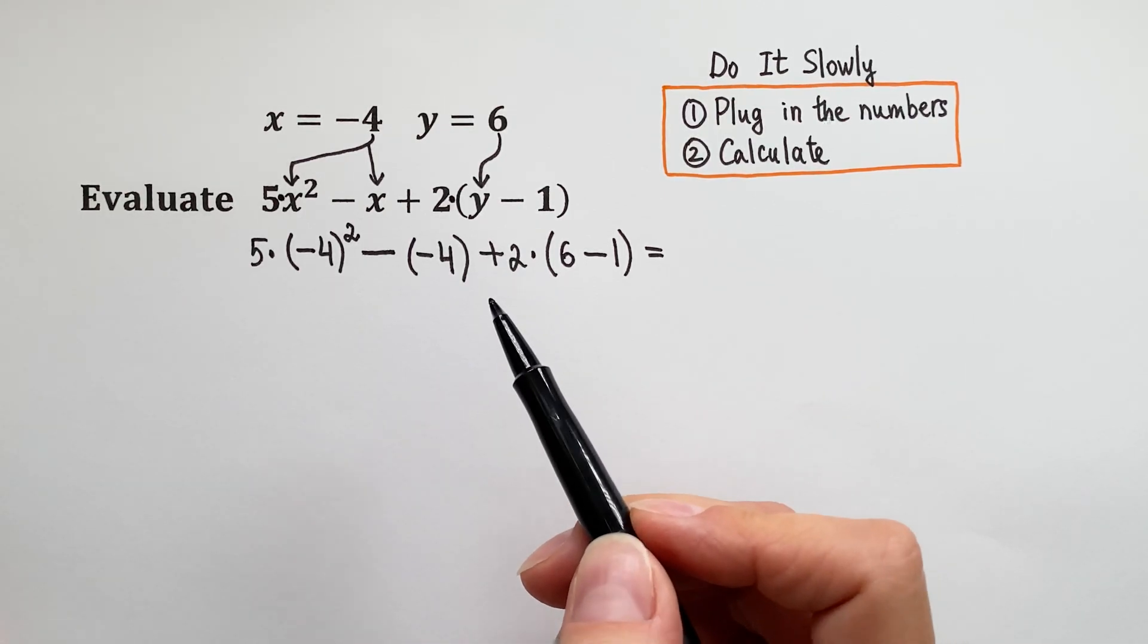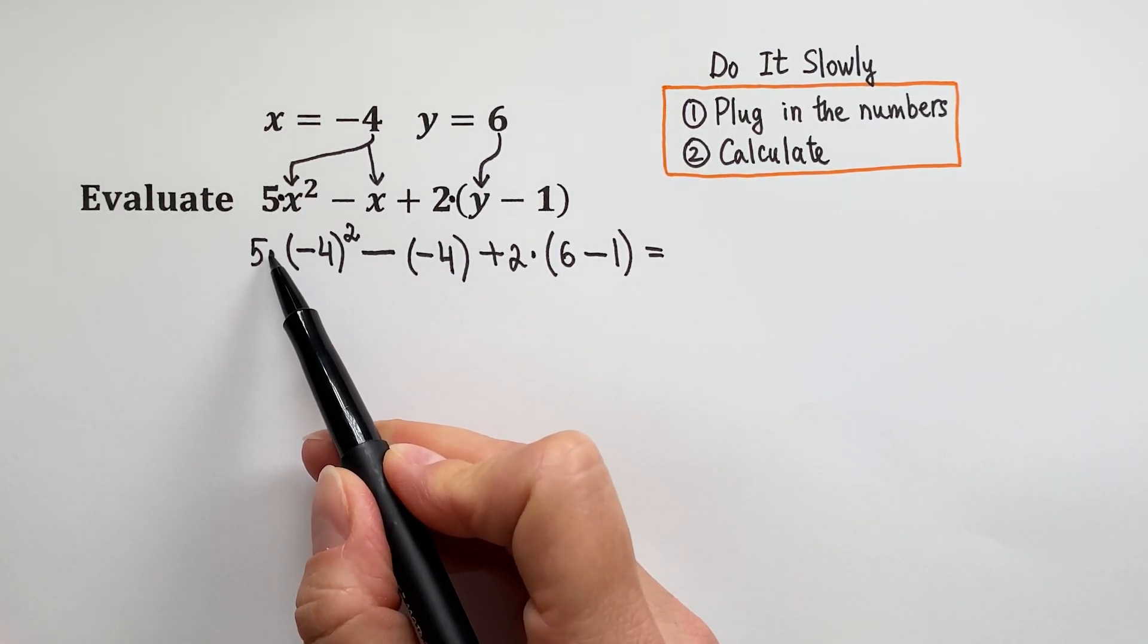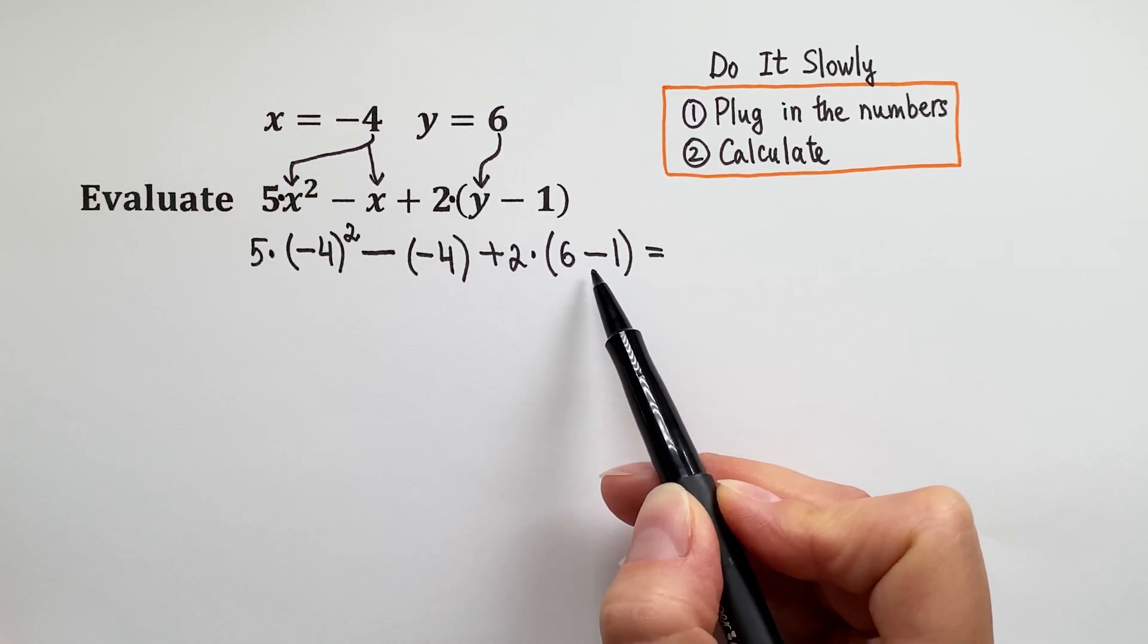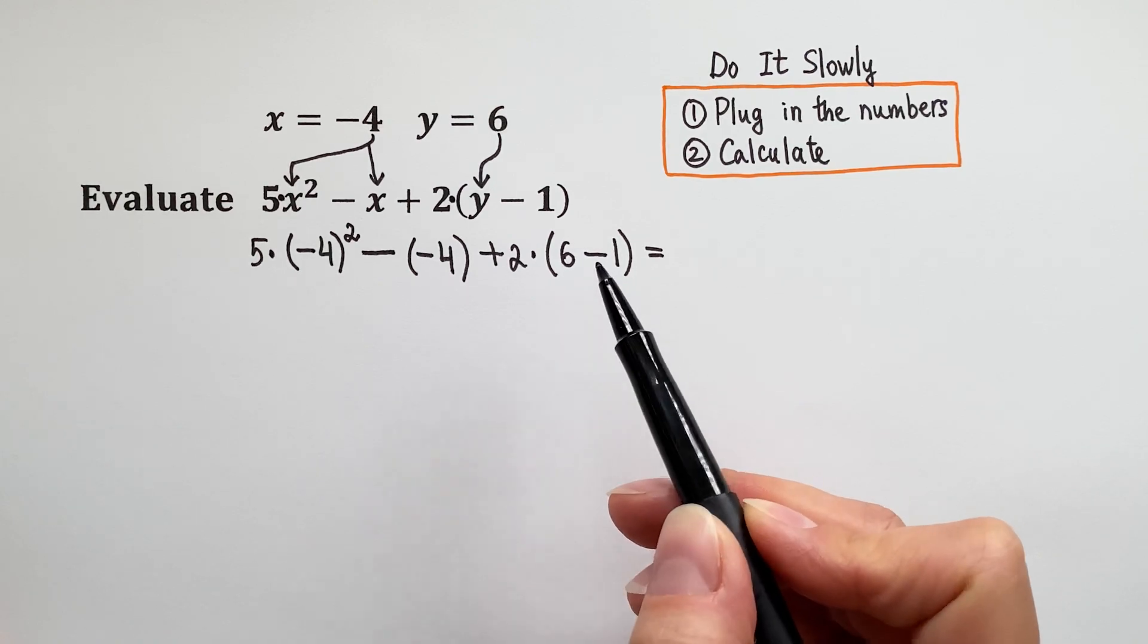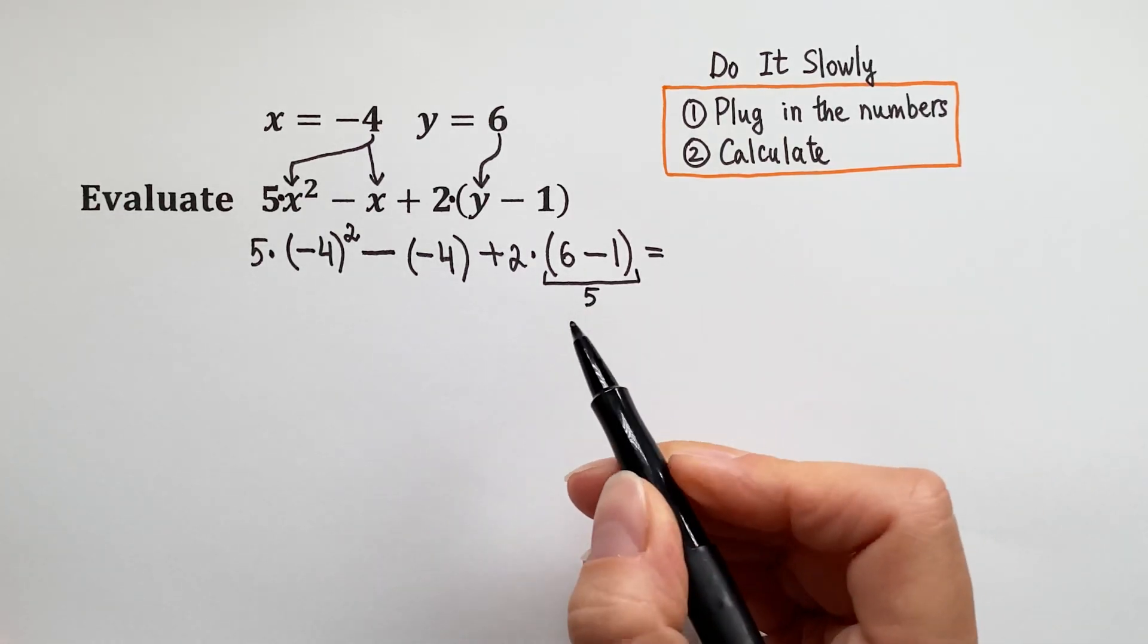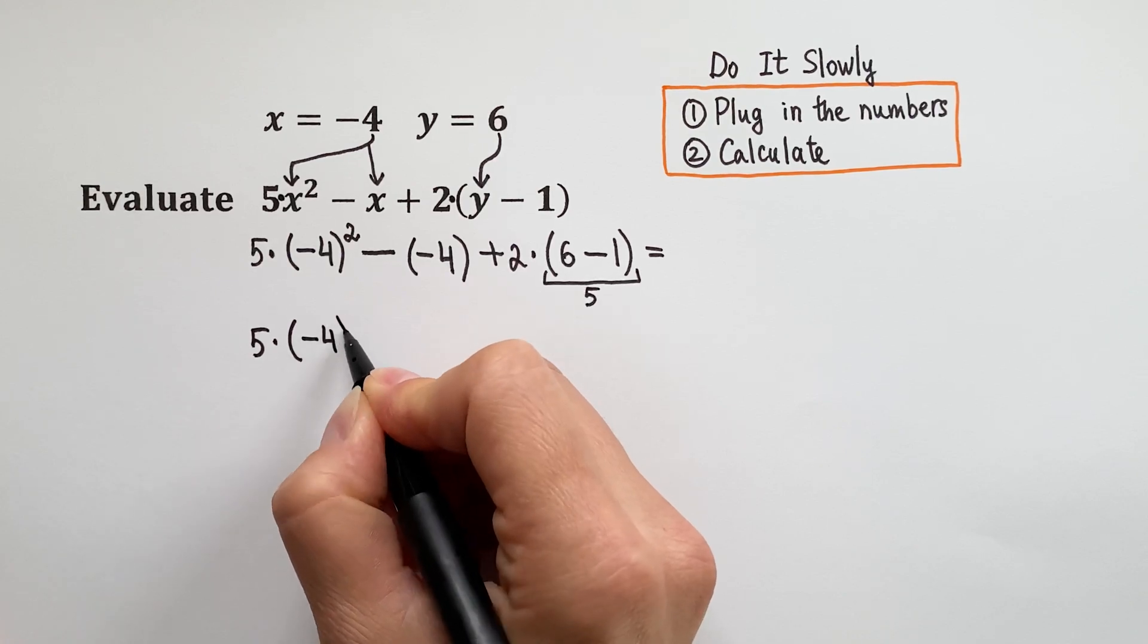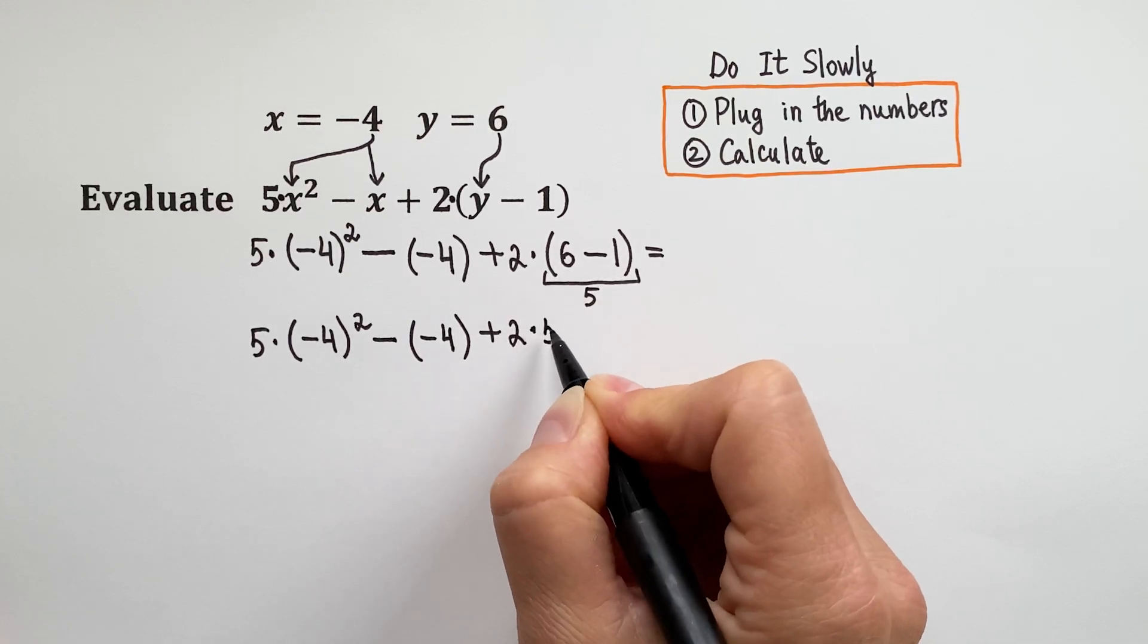Next we are going to calculate according to the order of operations. What operations do we see? We see multiplication, raising to a power, subtraction, addition, multiplication, and we have parentheses. Inside the parentheses we have subtraction. So first we must do what's inside the parentheses. So 6 minus 1 is 5. Now let's rewrite and see what our next step is. 5 times negative 4 squared minus negative 4 plus 2 times 5.